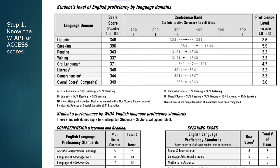Let's use WIDA resources now to plan instruction and assessment. Step 1: Know the WAP score of your student. Here's a copy of a printout that you receive from ACCESS testing results. Along the right side, you'll see the proficiency level for each area — listening, speaking, reading, writing. Then there are some combined areas. Oral language is a combination of listening and speaking. Literacy score is a combination of reading and writing. Comprehension score is a combination of reading and listening.